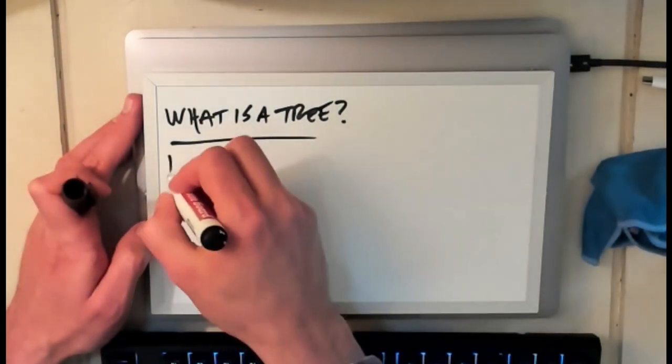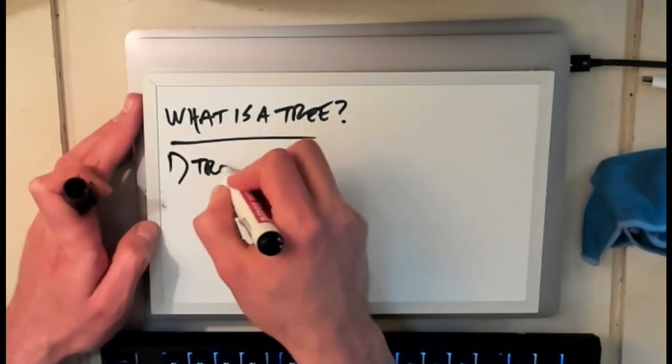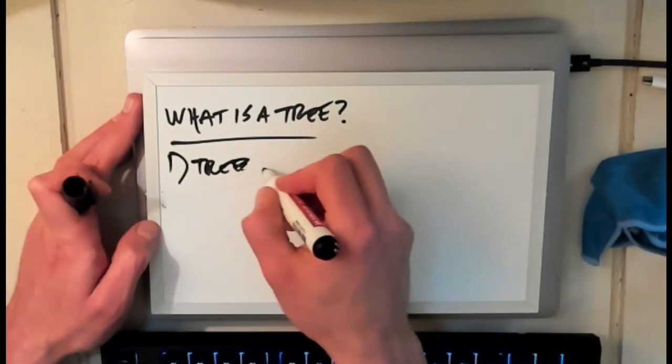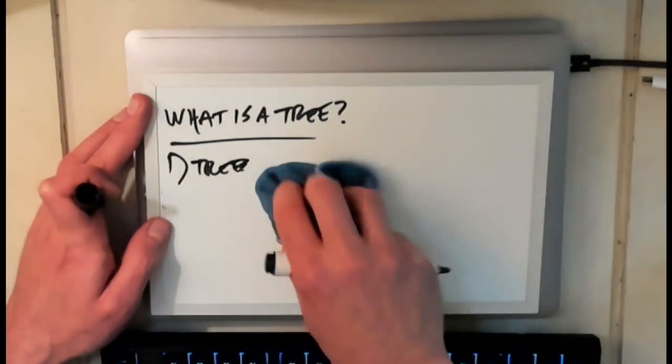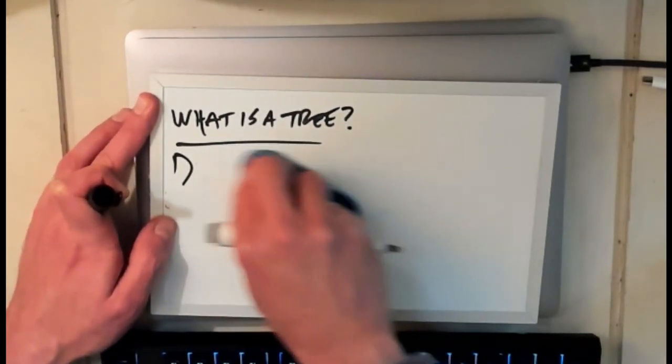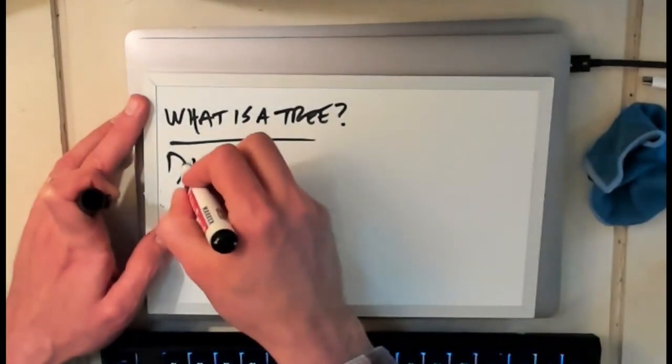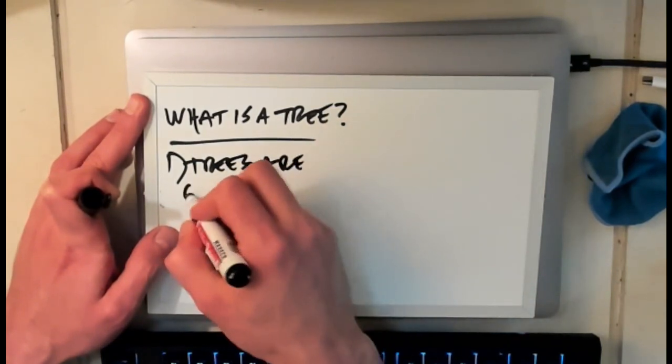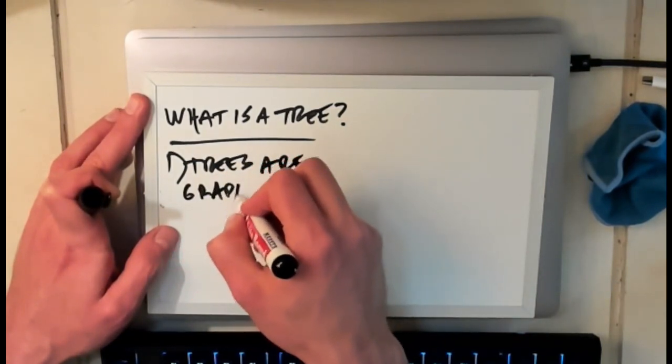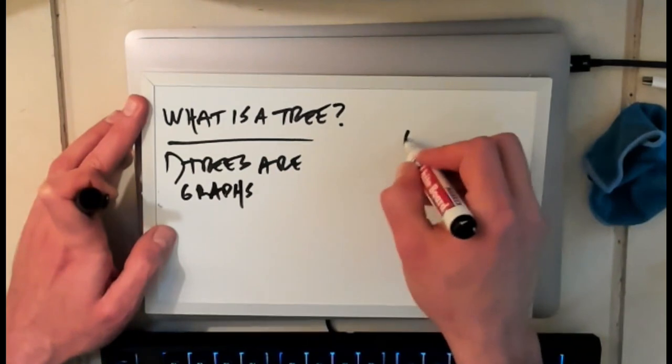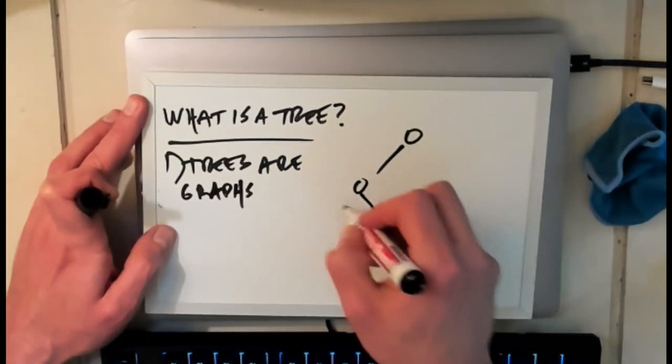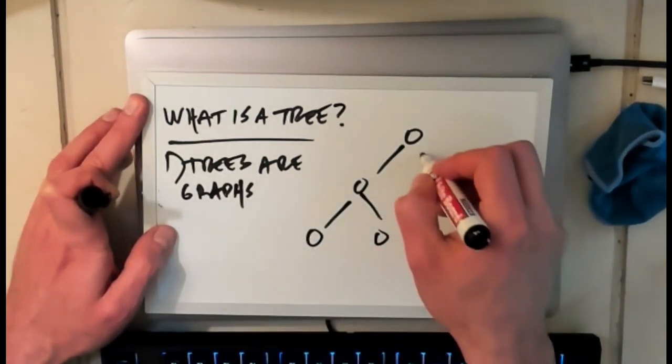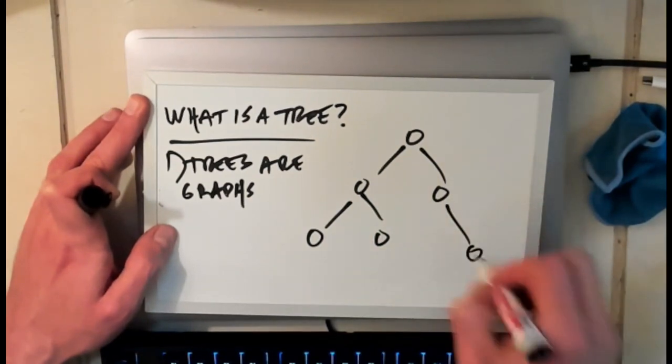So the first thing to note is that trees are graphs. So every tree is a graph. So if I draw a tree here, let's make this a binary tree like the ones that we've been focusing on, this is a graph.